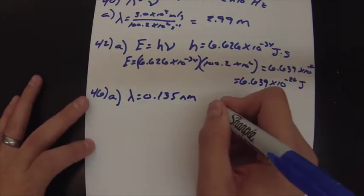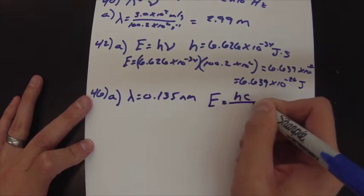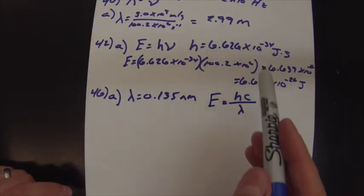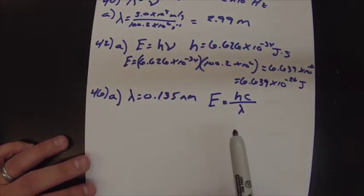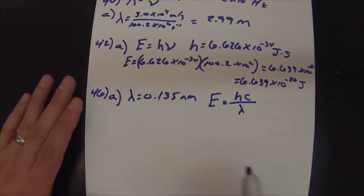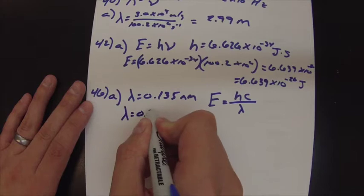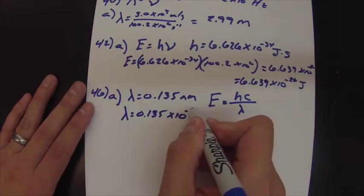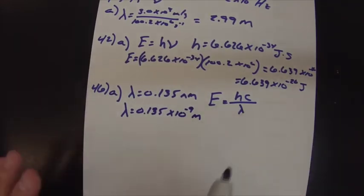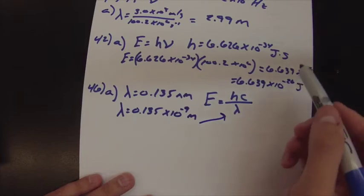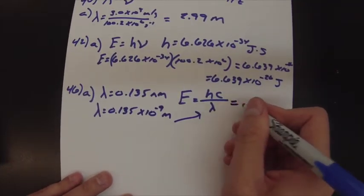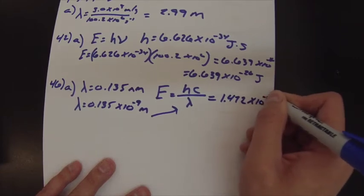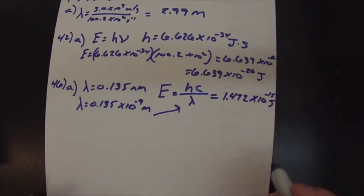We're going to use E = hc/λ. H is Planck's constant, c is the speed of light — both constants we've identified before. The wavelength needs to be in meters, so we convert 0.135 nanometers: a nanometer is 10 to the negative 9 meters. Plug in h, c, and λ correctly and you should get an answer of 1.472 times 10 to the negative 15 joules per photon.